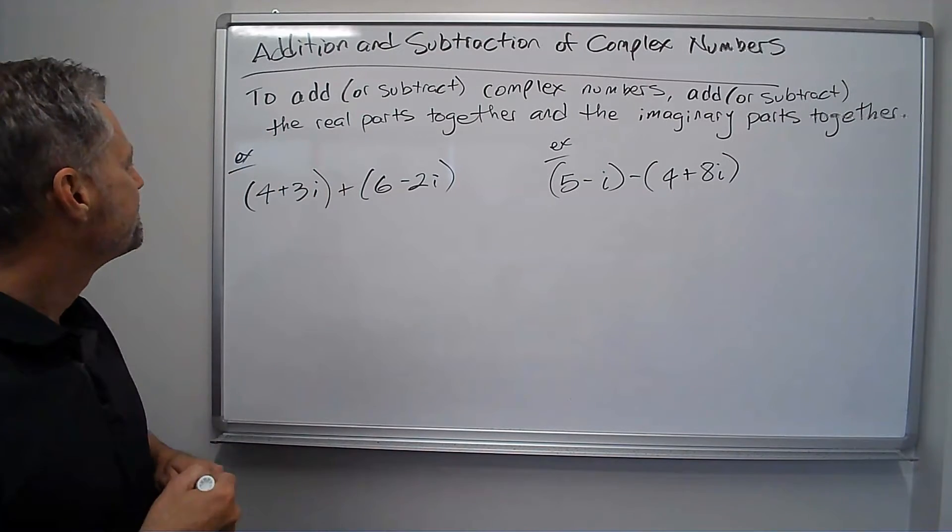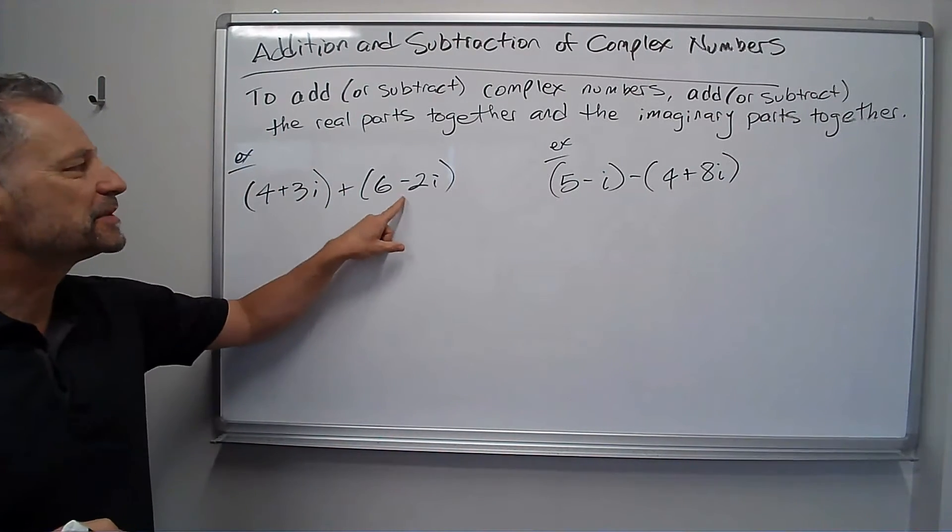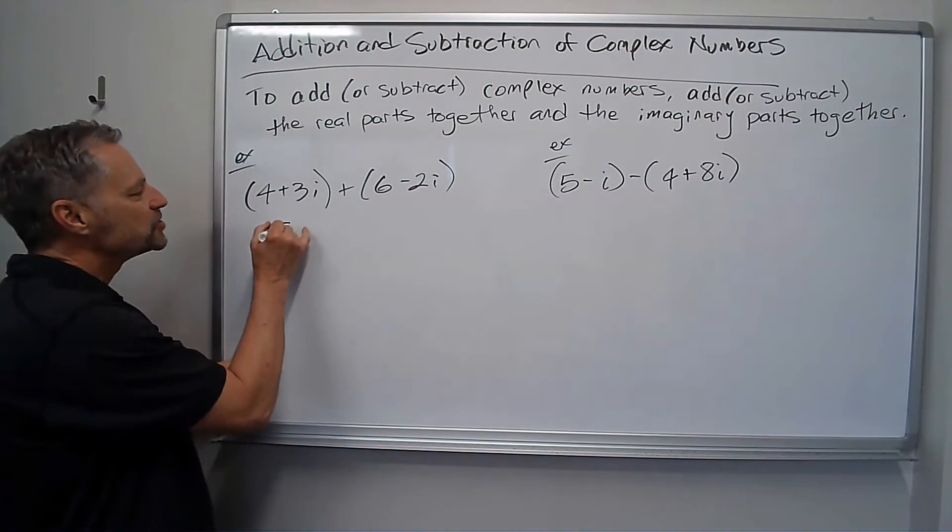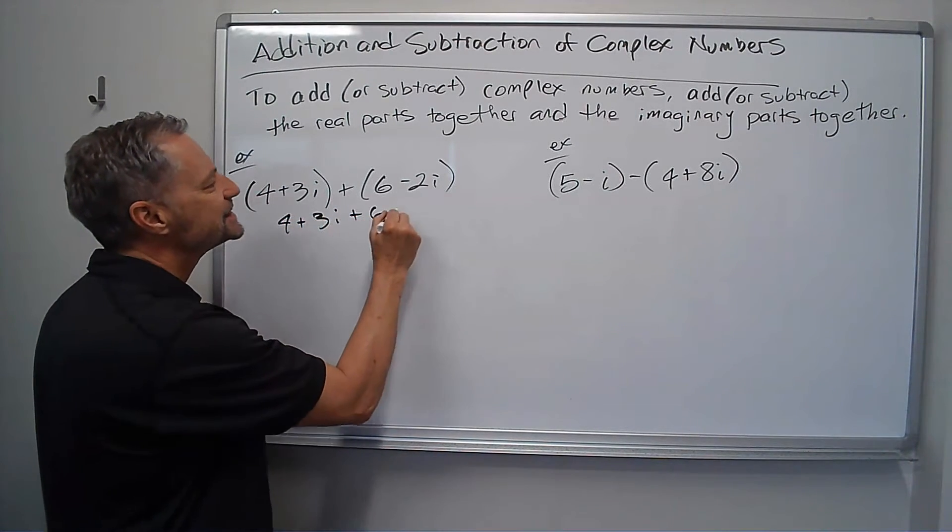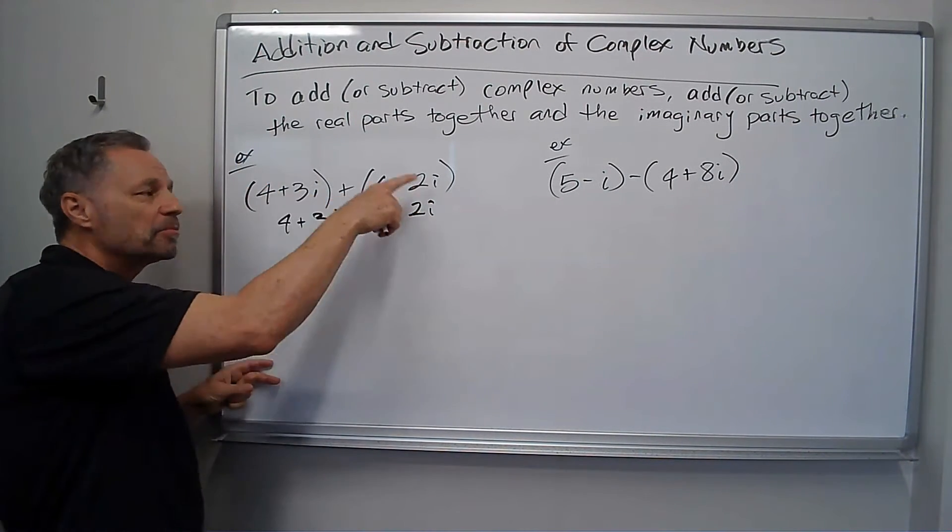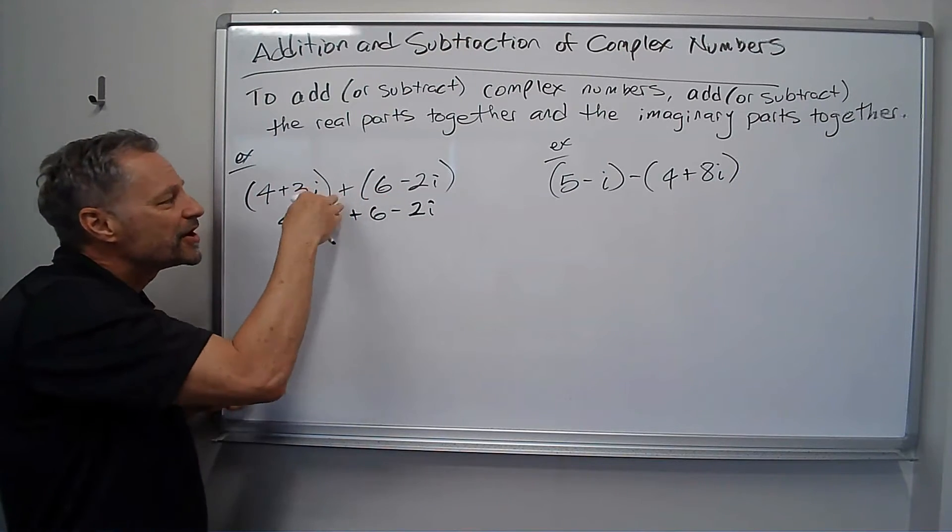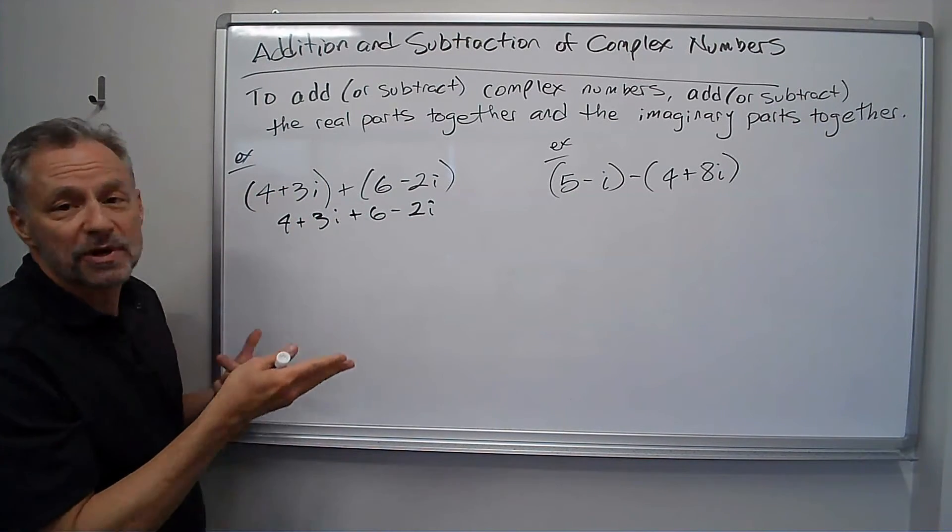Let me give you an example. So I've got 4 plus 3i plus 6 minus 2i, and notice we can just drop these parentheses. They're just separating the complex numbers, but they're not doing any operation that we need to worry about.